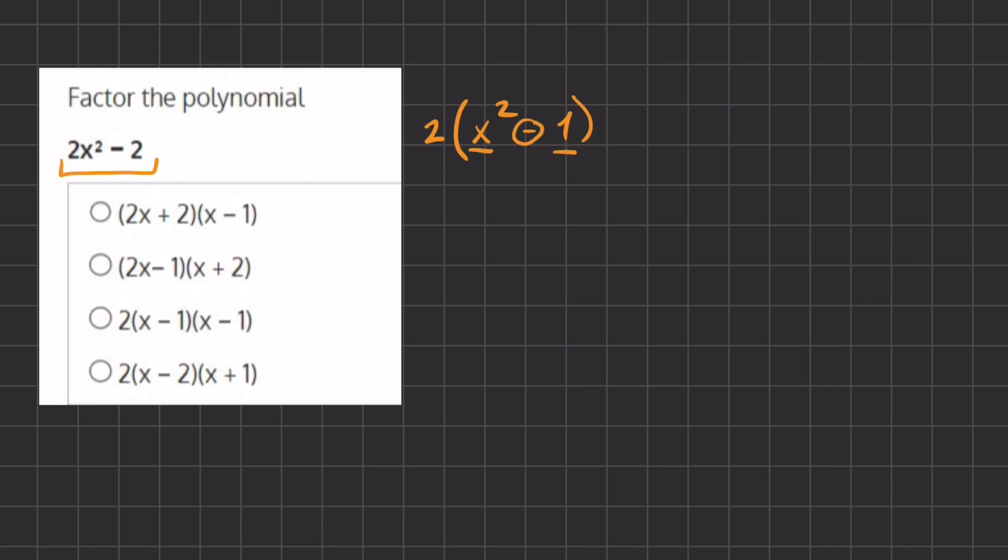Another example that might be more obvious is x squared minus 9, because we have x, which is squared, minus 3, which is also squared. So we have a difference of 2 squares.